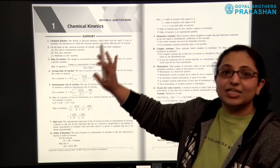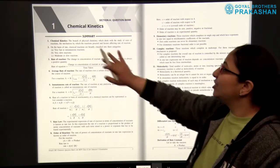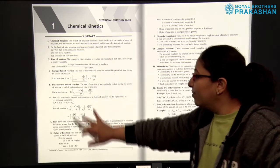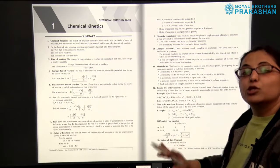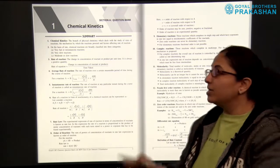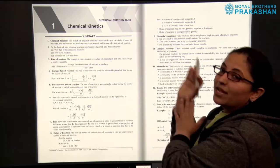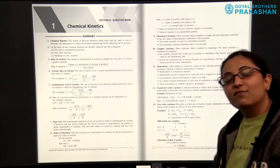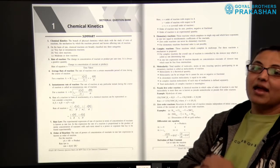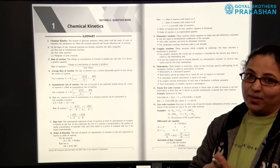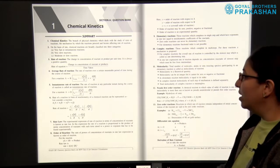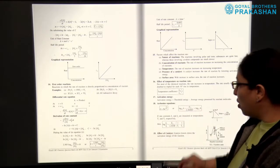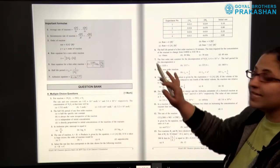This is Section A, the question bank. Chapter 1 is chemical kinetics. A summary is given at the start — all important points of the chapter are provided at the beginning of each chapter and unit, given point-wise so that the child can revise the chapter in a very short while. All important points, all formulas, everything is given in the starting.